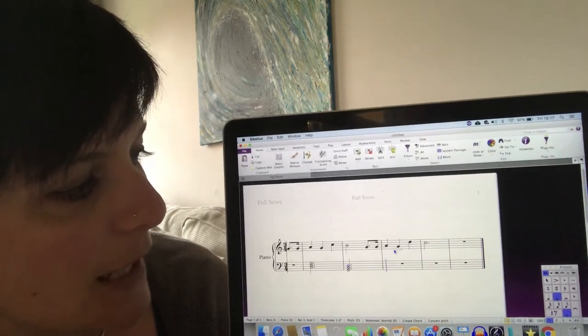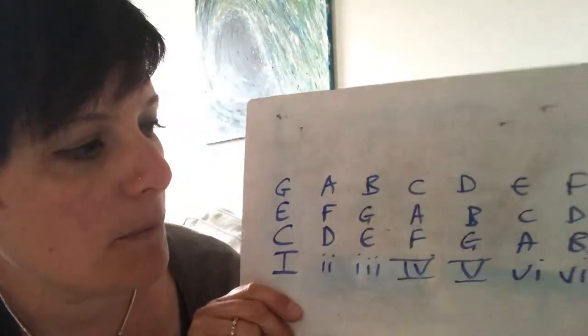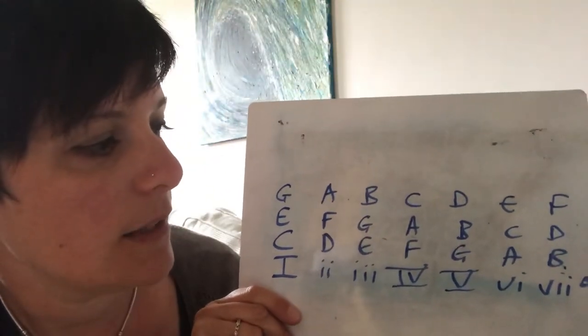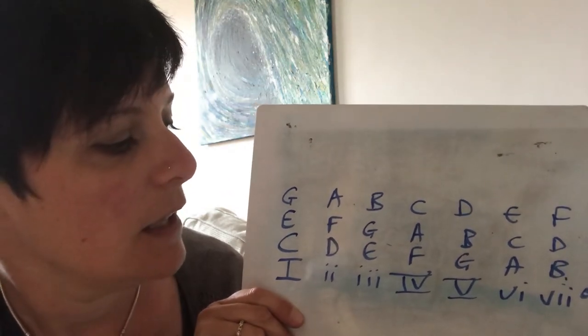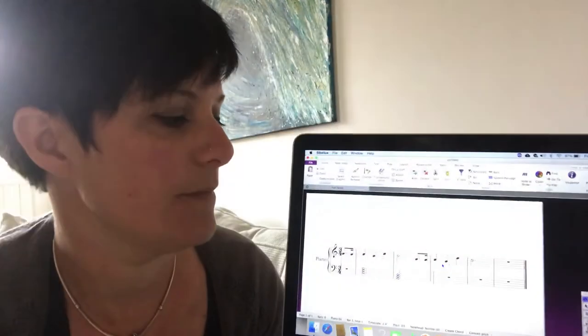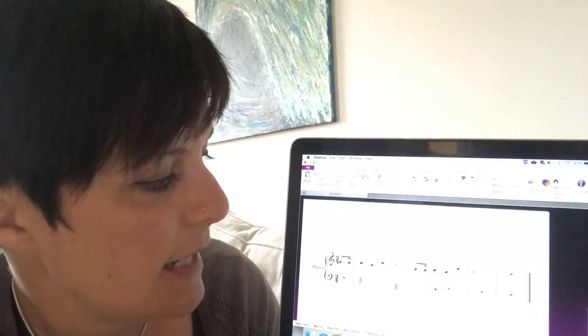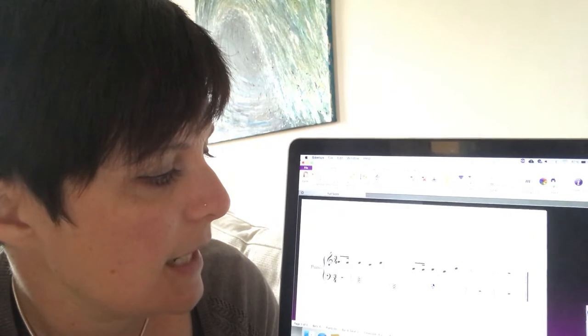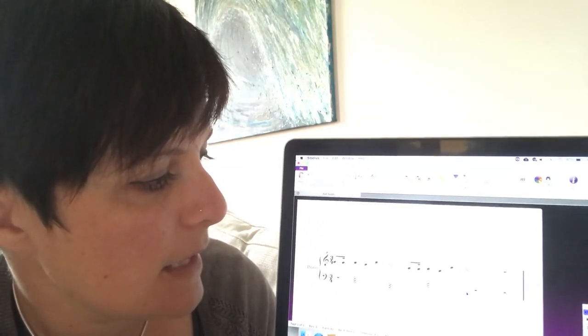And then next bar we've got an A, a G and a D. So really out of that bar I think again it will probably be chord 5. But just for argument's sake let's just try a chord 3 just for a bit of variation. So we're going to put an E in, E, a G and a B.